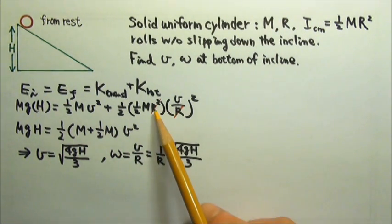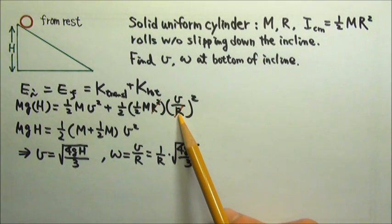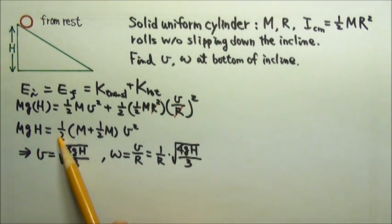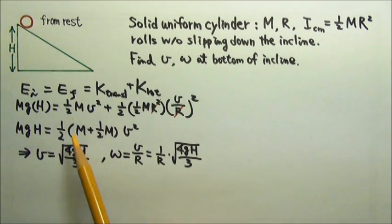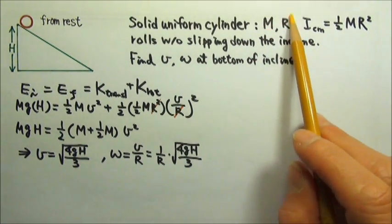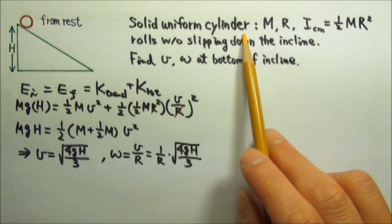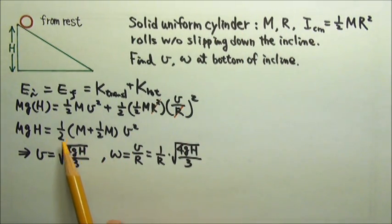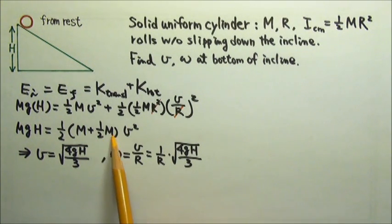Notice that in this case, the r's canceled and the mass canceled. So the speed at the bottom of the incline does not depend on the mass, does not depend on the r of the solid uniform cylinder.